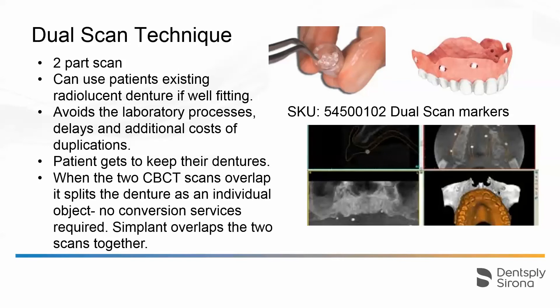To save costs and time there is another technique called the dual scan technique. With this one you can use the patient's existing radiolucent denture and just place some beads on the flange area — you can see there are three on one side and three on the other, and also some in the palatal region, roughly around 12 beads. These are glass beads so you can embed them into the denture or just stick them on the surface and ping them off to reuse. If you're embedding them, you're not sacrificing aesthetics because they're clear.